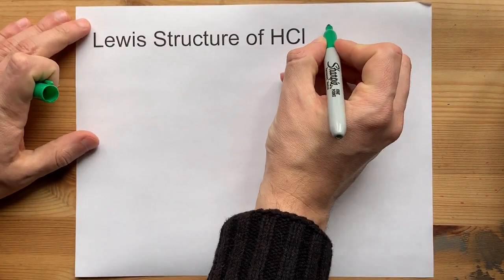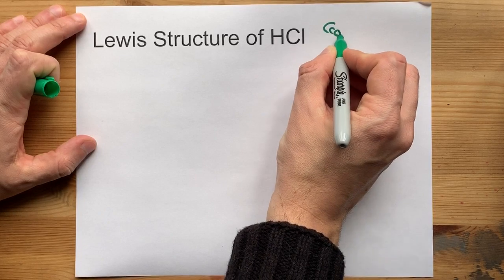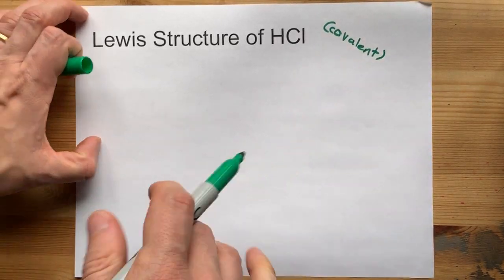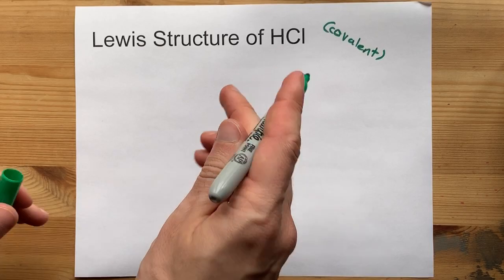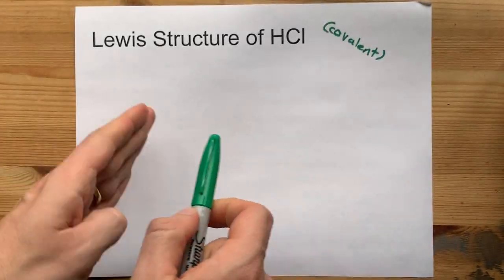When two non-metals get together, they form what's called a covalent bond, which is when they share electrons. There's no transfer from one to another.